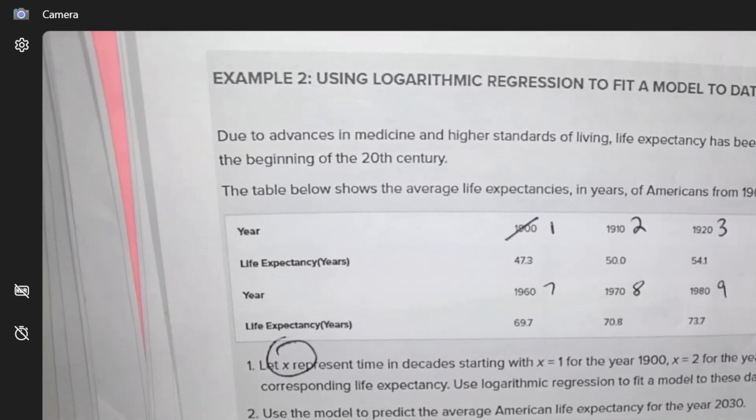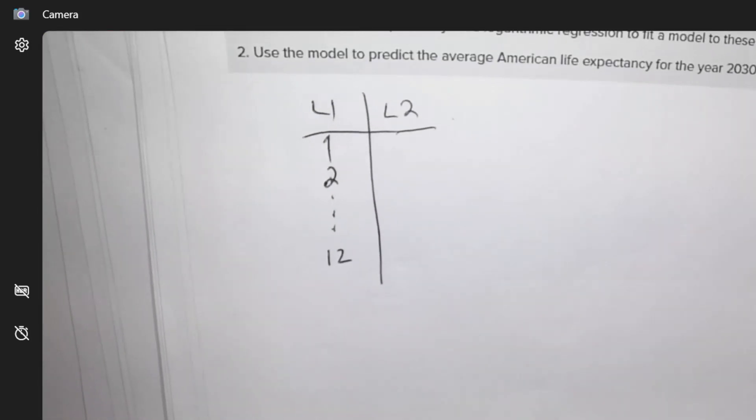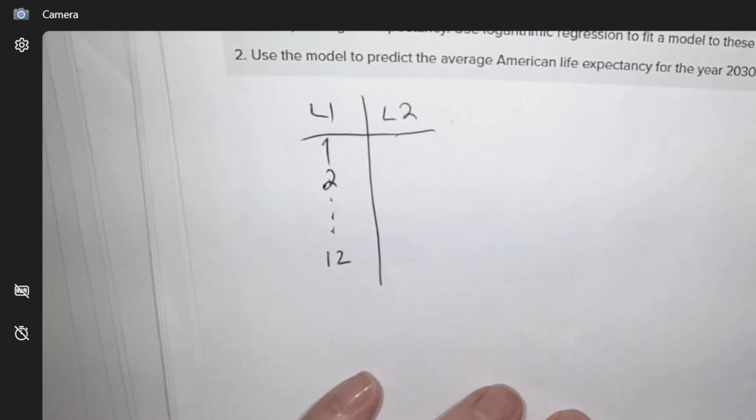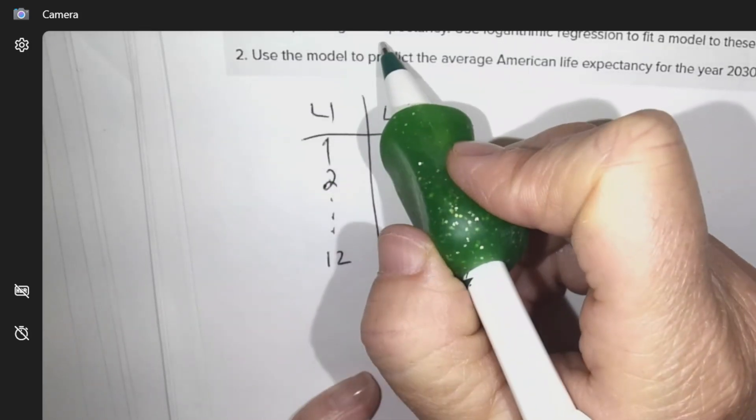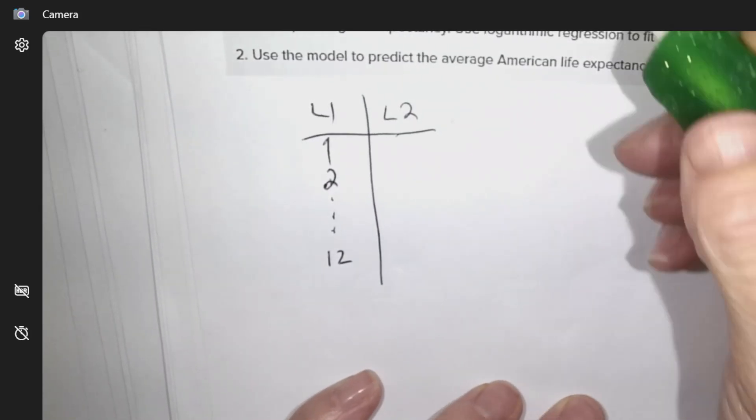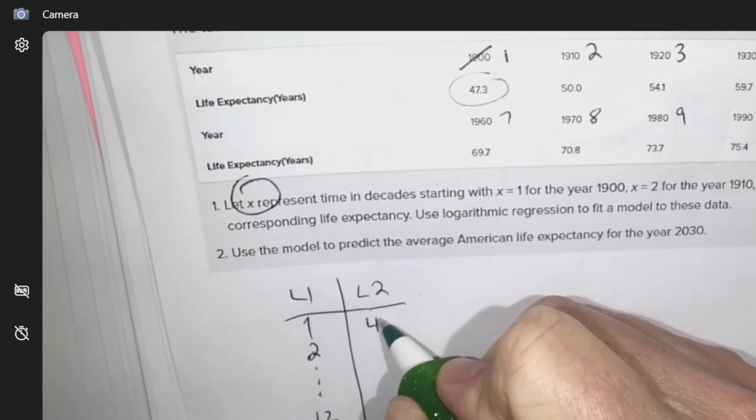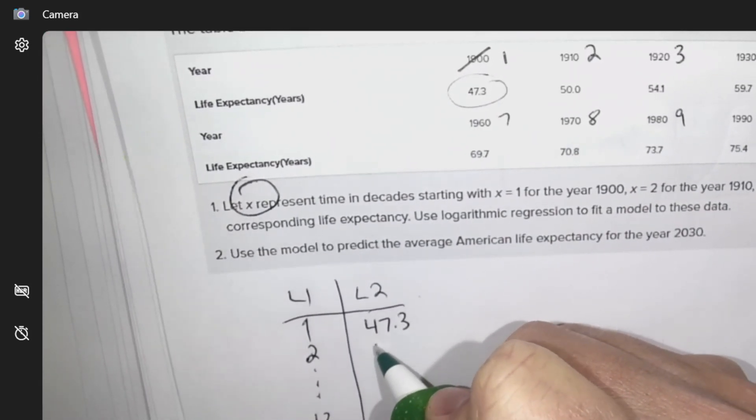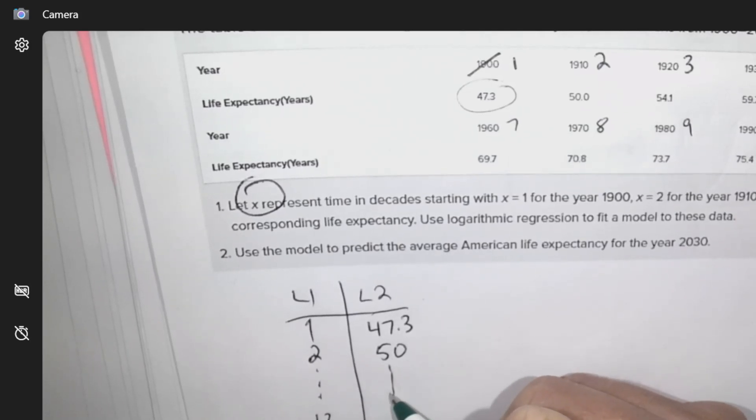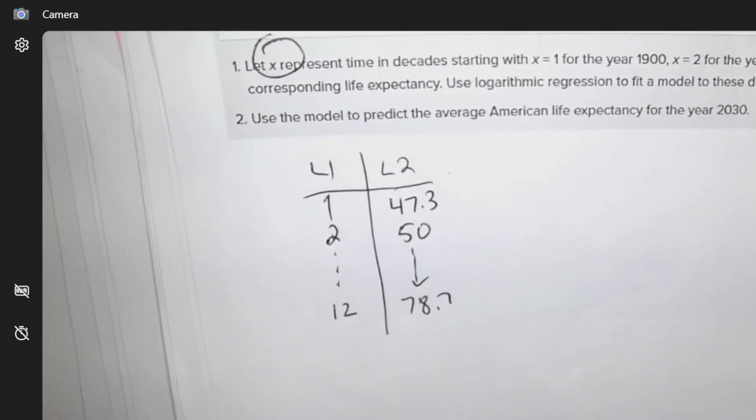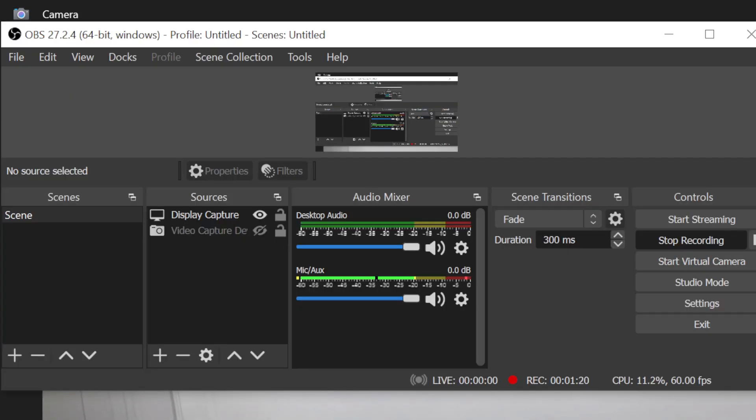Okay, so we're going to be doing 1 to 12 in the L1. Y represents the life expectancy, so we're going to be typing 47.3, 50, all the way to 78.7. Okay, so go ahead, I'll give you a minute for the typing of the info in the chart.